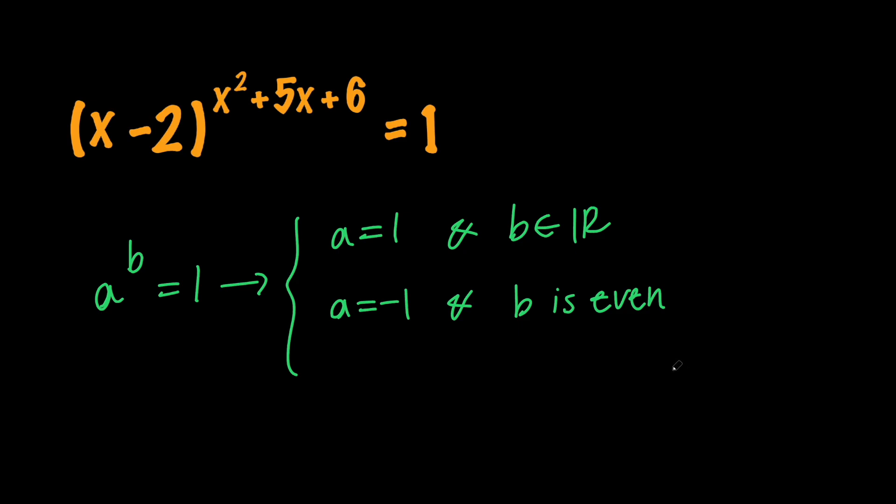And finally the last case is that a should be anything other than 0 and b should be 0 because anything other than 0 to the power of 0 gives us 1. So let's go ahead and use these three cases to solve for x.